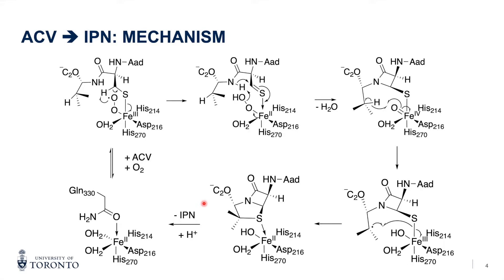People have described IPNS as a promiscuous enzyme that can accept many analogs of the ACV tripeptide. And in many cases, it's the reaction with such ACV analogs that have been useful in determining the mechanism of this catalysis.